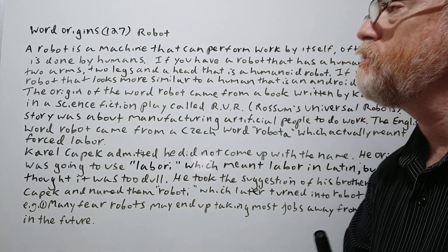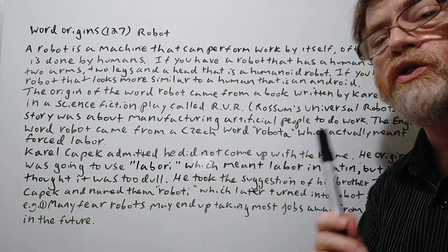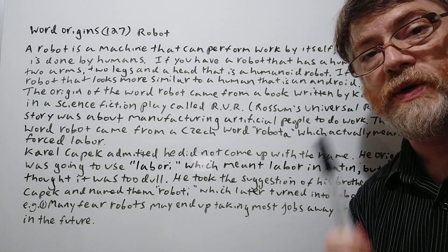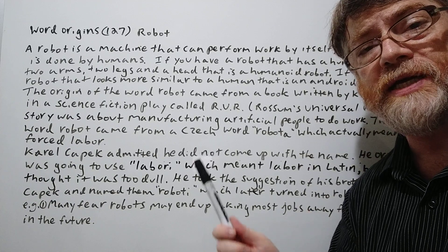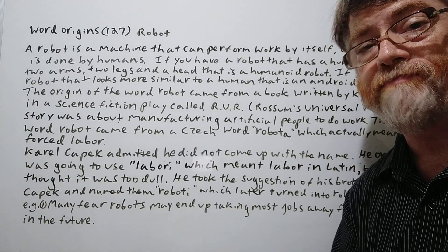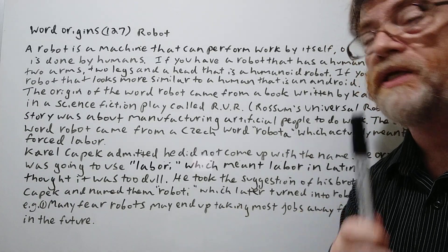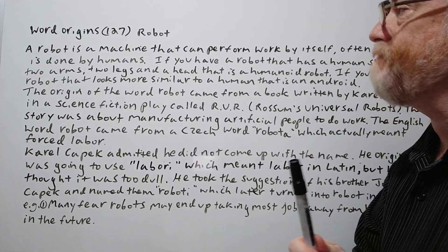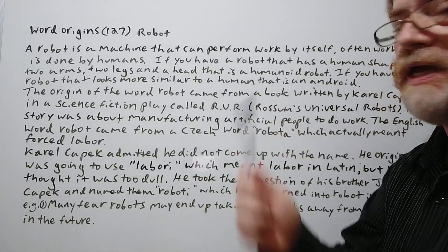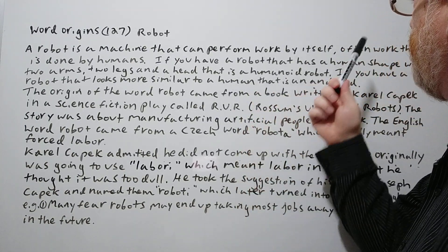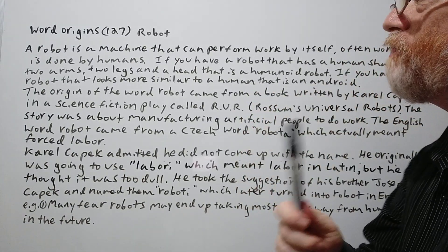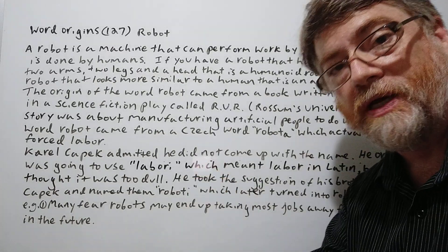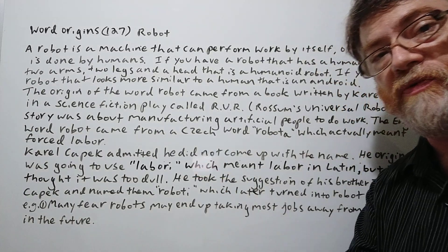Hi, this is Tutor Nick P and this is Word Origins 127. The word origin today is robot. Let's take a look at the note here. A robot is a machine that can perform work by itself — often work that is done by humans, or that was done by humans before.